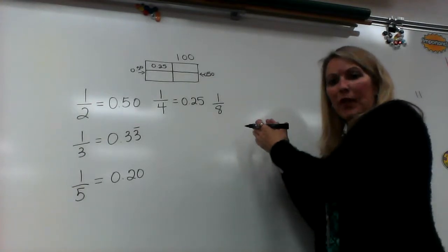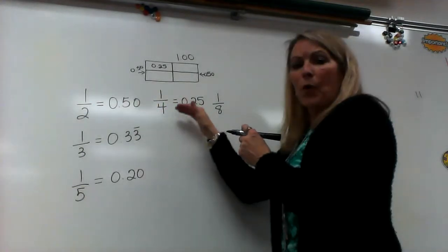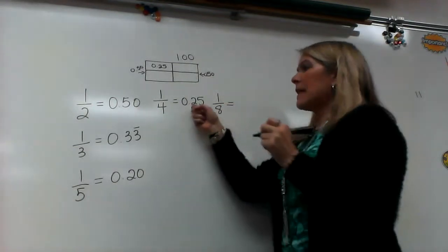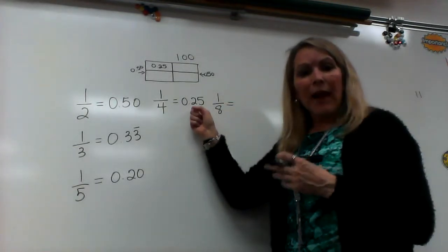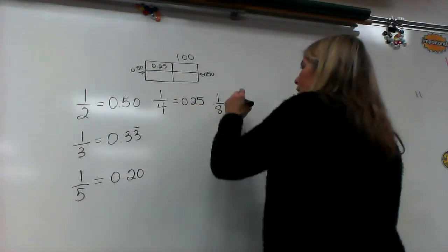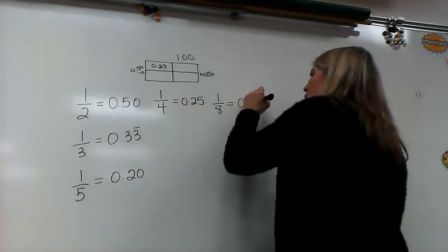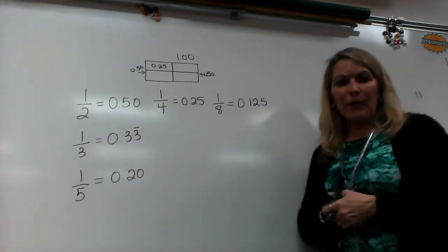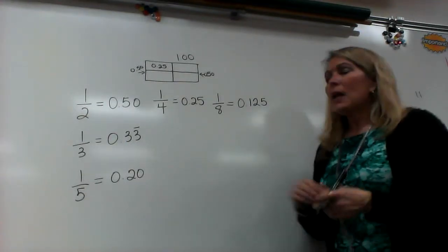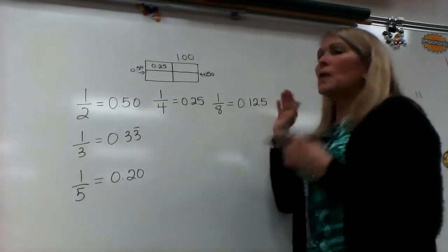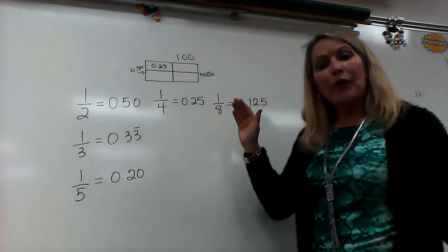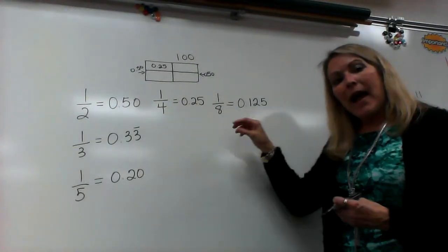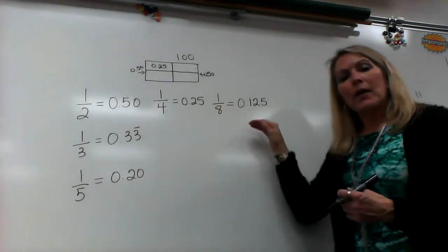They're related to each other. Halves are related to fourths, and fourths are related to eighths. Well, an eighth is half of your 25 hundredths. Well, half of 25 is 12 and a half. So, that's the decimal equivalent for your eighths. Using your relationships, you're just halving them every single time that we're doubling the denominator. So, we half the decimal when we double the denominator.